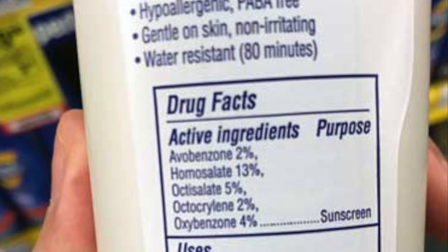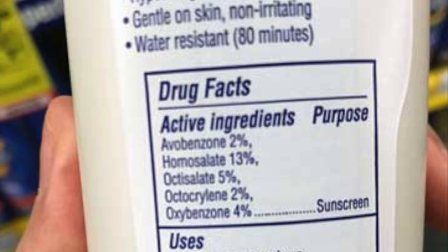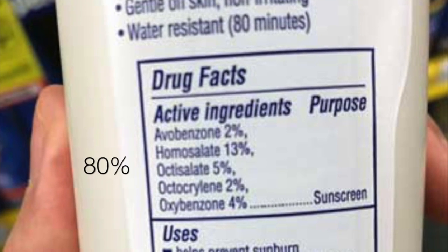Oxybenzone is one of the most common organic compounds in sunscreen. The molecule is found in around 80% of chemical sunscreens.